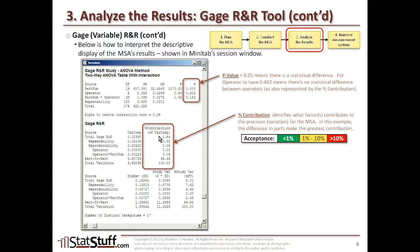If it's anywhere from 1 to 10%, we want to be careful — there may be more variation than we'd expect. If it's greater than 10%, there's something going on — too much variation — so we need to go back and maybe make some fix.